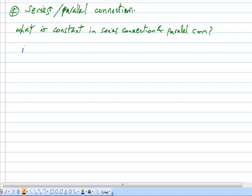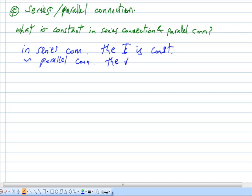The answer is in series connection, the current is constant. While in parallel connection, the voltage is constant. This is a series connection network, and this is a parallel connection network.